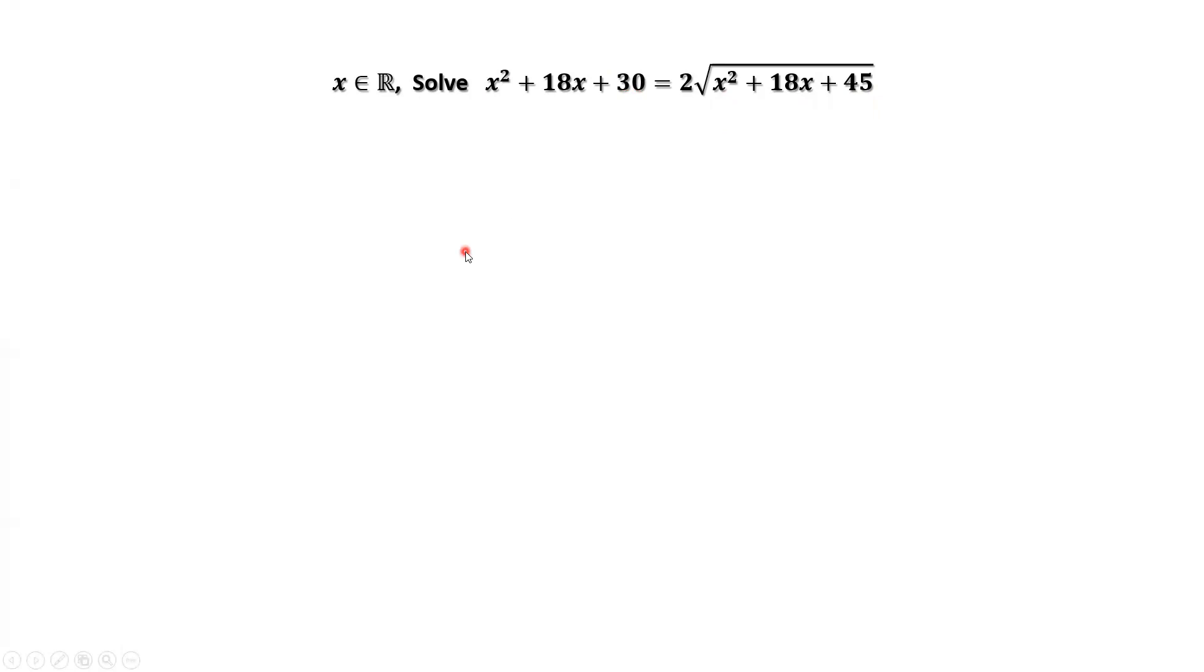We move everything to the left-hand side. Now we have this equation. How did we get this equation? The inside part of the square root originally here is 30. 30 plus 15 is 45.